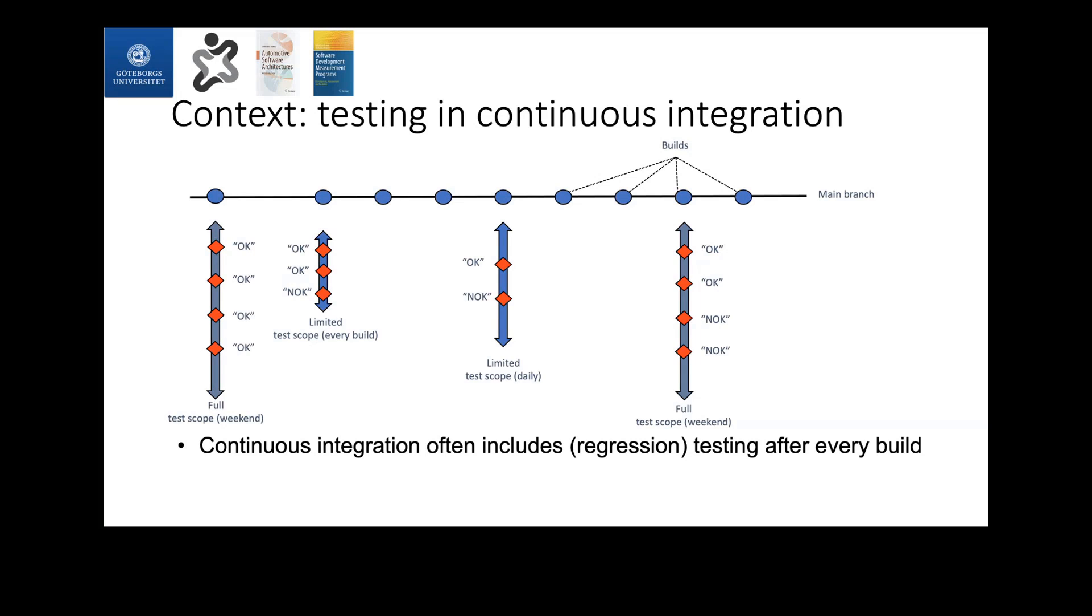For that reason, companies often organize their test suites in different forms of varying sizes. We have a full scope, which includes all the tests, and those are often run over weekends. We have a smaller test suite, which is a subset of the pool of tests, executed overnight on a daily basis. And we also have a minimal suite type, which has the smallest amount of test cases and is executed after a build is created. The subset of test cases in this minimal suite is selected based on different criteria depending on what test case selection approach is being used.